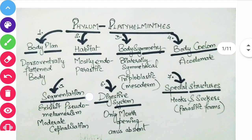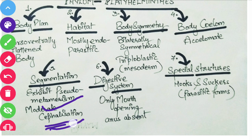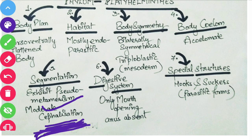Now coming to segmentation: they have pseudometamerism and moderate cephalization. Cephalization means the head is differentiated from the other body parts — all sense organs are kept in the head. Previous to this phylum, animals don't have cephalization. But in this phylum, cephalization begins — though moderate, not complete. Cephalization is an important step in evolutionary history.